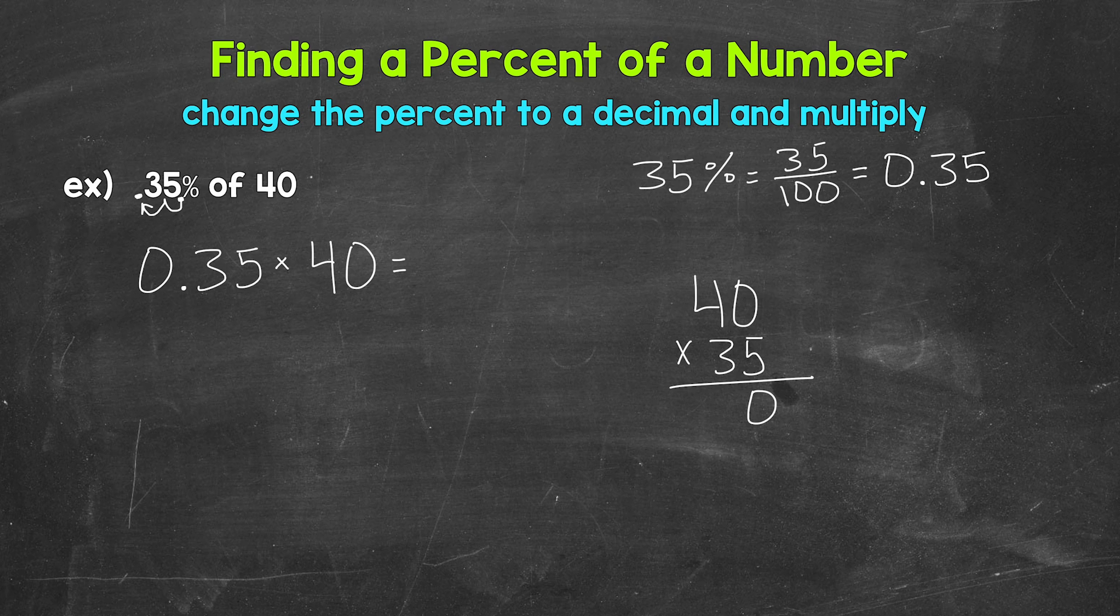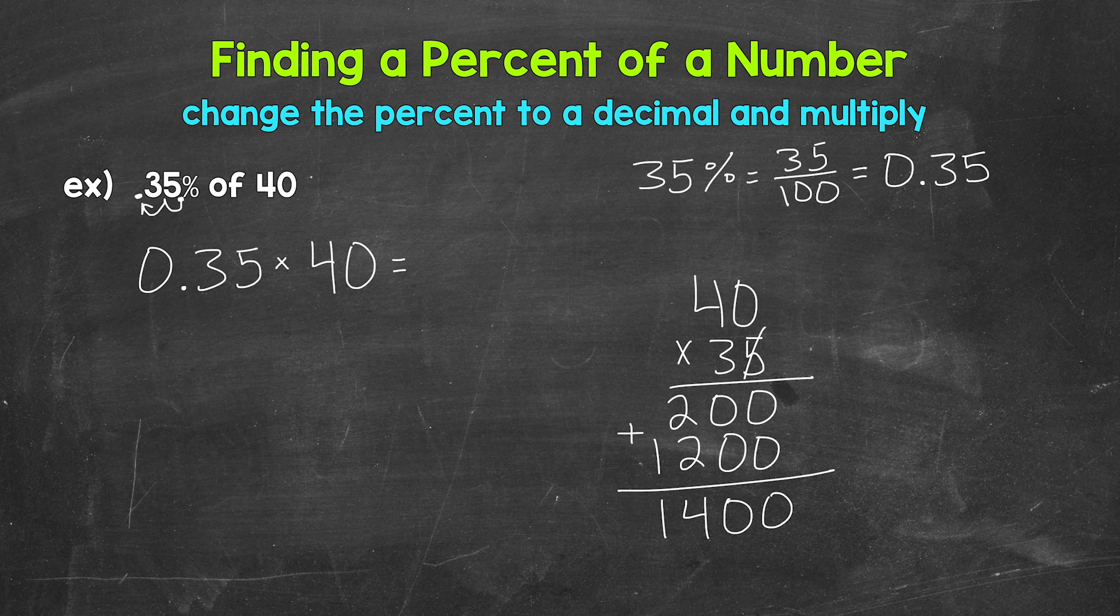And now we multiply. 5 times 0 is 0. 5 times 4 is 20. We are done with this 5 and we are moving over to the 3, so we need our 0 here. 3 times 0 is 0. 3 times 4 is 12. And now we add. 0 plus 0 is 0. 0 plus 0 is 0. 2 plus 2 is 4. And then we have 1.